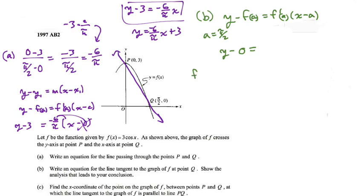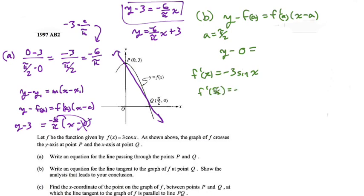Now let's find f prime. For f(x) = 3cos(x), the three is just a scalar. The derivative of cosine is negative sine, and since there's just x inside — no chain rule needed — we get f prime of x equals negative three sine x. Plugging in a = pi over two: f prime of pi over two equals negative three sine of pi over two. On the unit circle, pi over two is a quarter turn, where the coordinates are (0, 1), so sine of pi over two equals one.